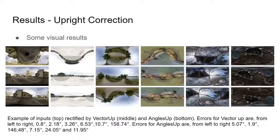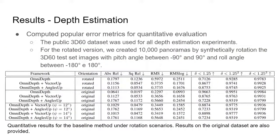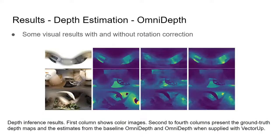Here we can see some visual results. In the top we have the input image, in the middle the image rectified by VectorUp, and in the bottom the image rectified by AnglesUp. We can see some popular metrics to evaluate depth estimation. In the rotated dataset, VectorUp and AnglesUp improve the OmniDef results. Even though the results for VectorUp and AnglesUp are really similar, VectorUp has more homogeneously distributed errors. Visual results are shown left to right: input image, ground truth, OmniDef, and OmniDef supplied with VectorUp.